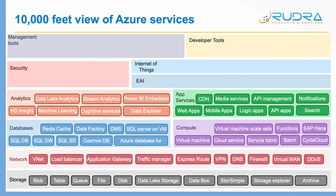And in Enterprise Application Integration, you have Service Bus, which is used for message-based integration. And you have BizTalk Services and Logic Apps, which is workflow-based integration. And Event Grid, which is basically an event routing service where you can define what should happen in near real-time when some event occurs. These are the key services in Enterprise Application Integration — there are other services also, but I'm touching only the key ones.